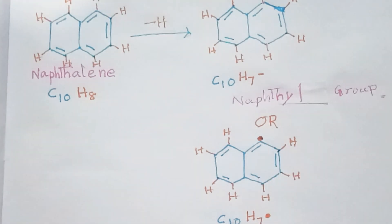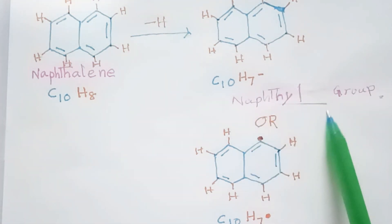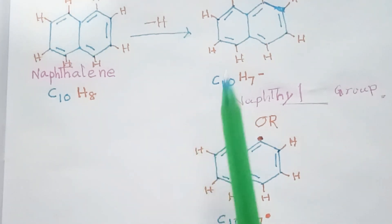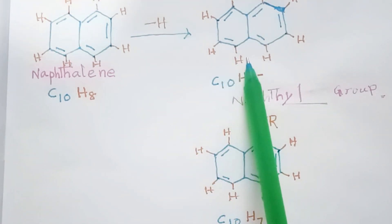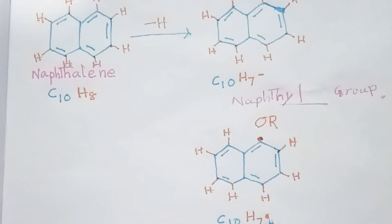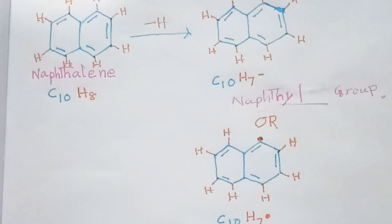We can also represent it as C10H7 with one free radical dot on the carbon atom — this is the naphthyl radical. Both the naphthyl group and naphthyl radical are the same, and these are called aryl groups or aryl radicals. Thanks for watching — please like, share, subscribe, and comment.